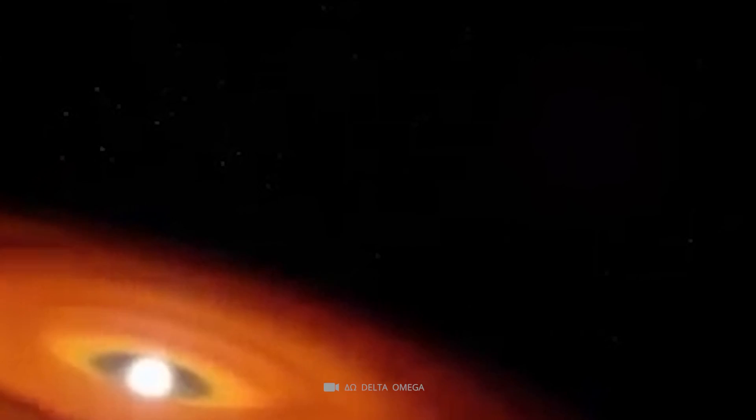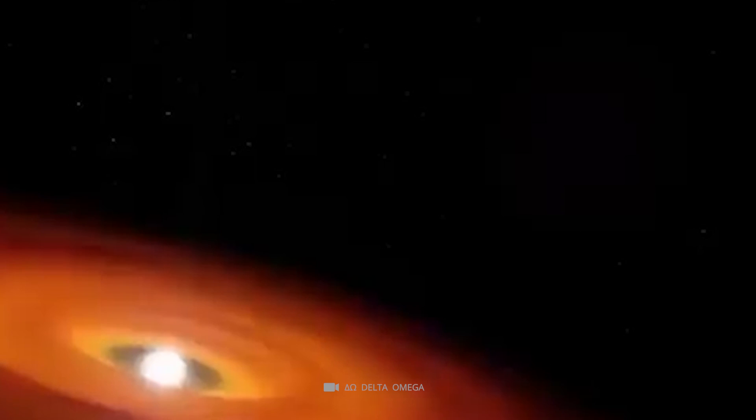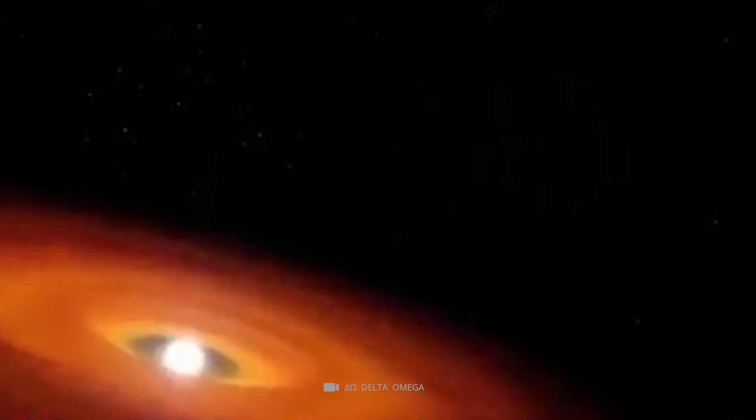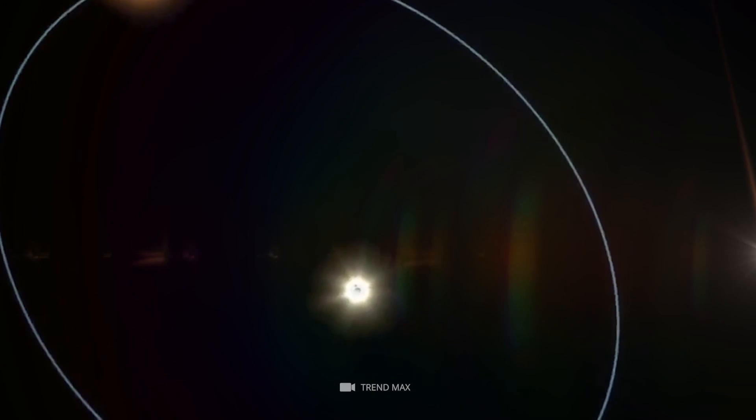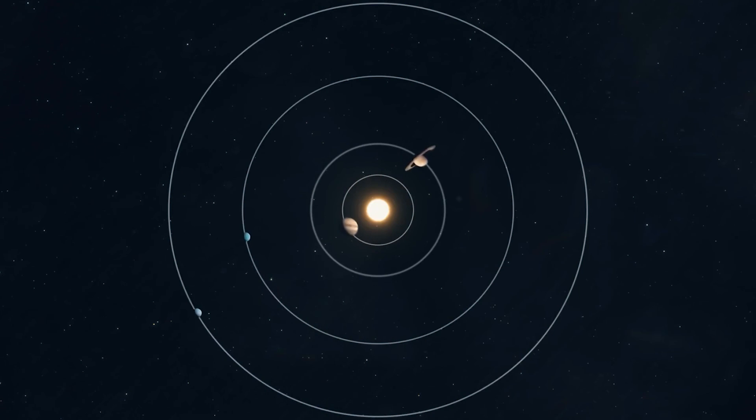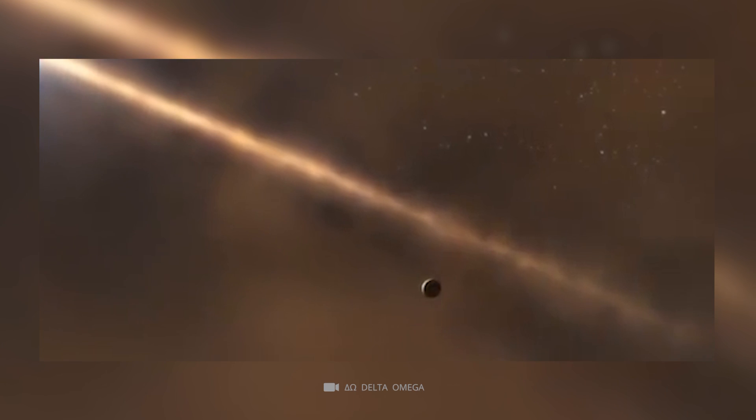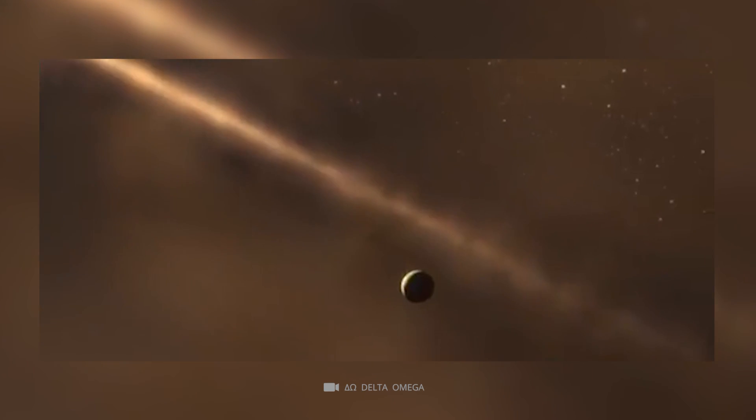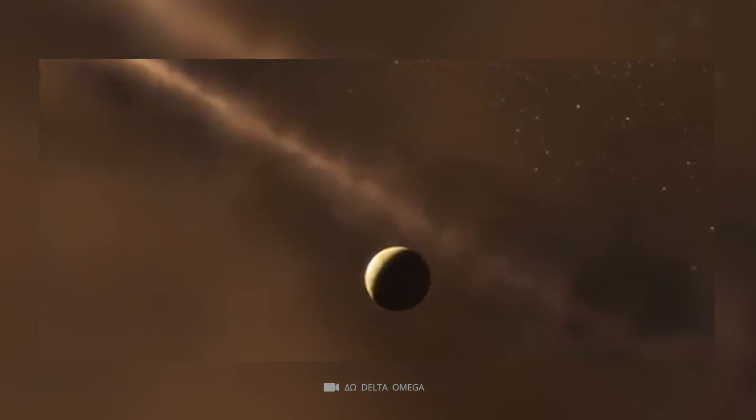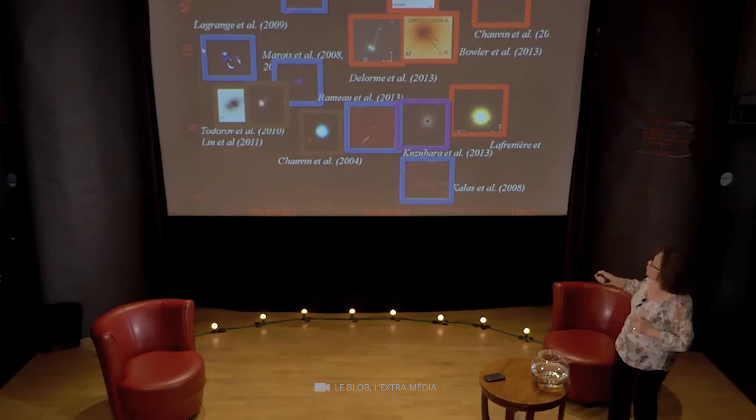It has an eccentricity of 0.106 plus 0.007 minus 0.006, which means that its orbit is slightly egg-shaped rather than a perfect circle. Another interesting fact about BETA PICTORUS B is that it is one of the few exoplanets ever observed with direct imaging.